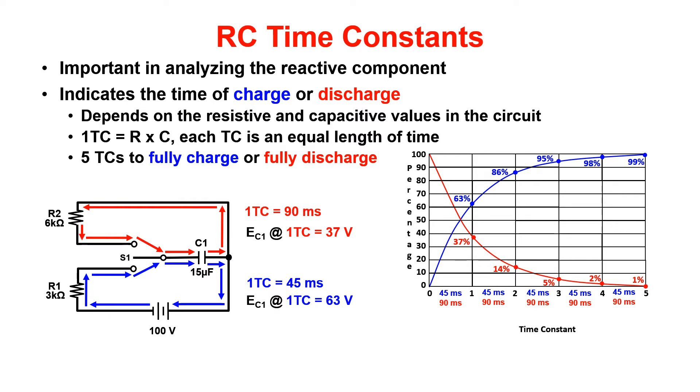Since we already know the one TC for the charge path is 45 milliseconds, take the time given, 135 milliseconds divided by 45, and that gives us 3 TC. Go to the percentage at 3 TC and multiply that by your applied voltage.